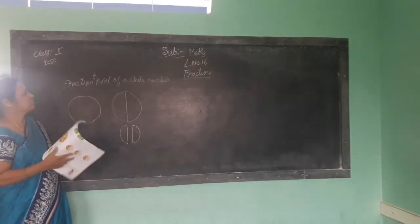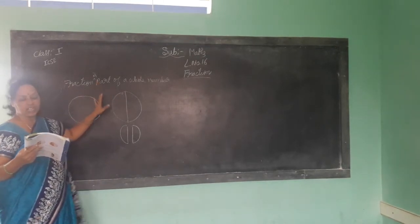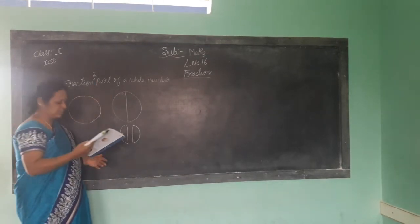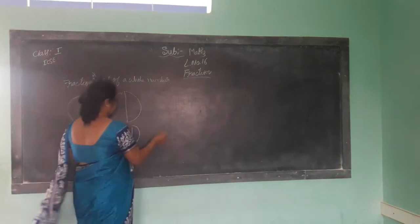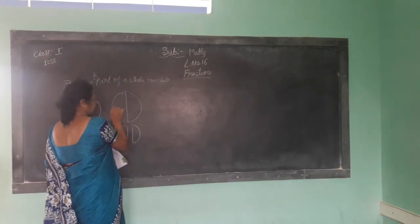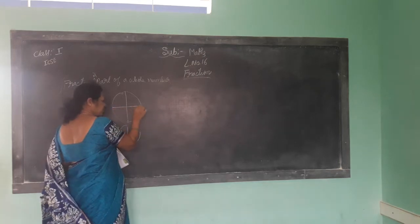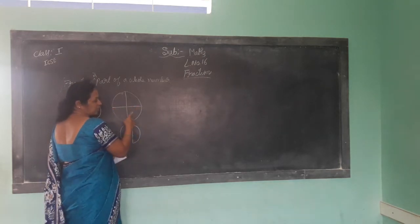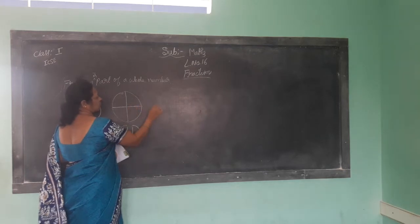Fraction is part of a whole number. So that is one half. Again I have made this half into what? That is one quarter. One quarter.